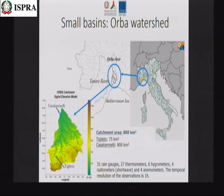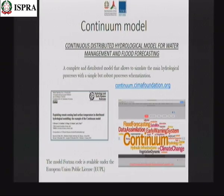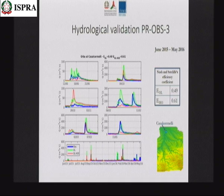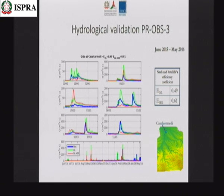This is a well-monitored basin, which is why it was chosen. We used the model run operationally by the Italian Civil Protection Department — the Continuum model. For the larger scale basin, in blue is the observation, green is the open-loop model without satellite information, and red is the model with assimilation. Overall, the use of precipitation observations produced an improvement in model performance for flood prediction at this scale.